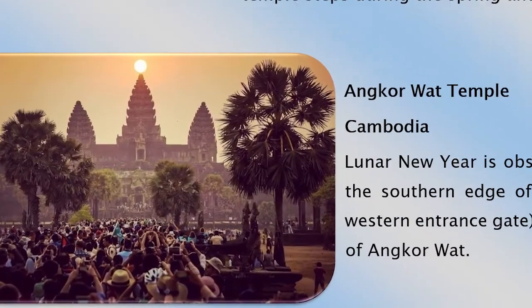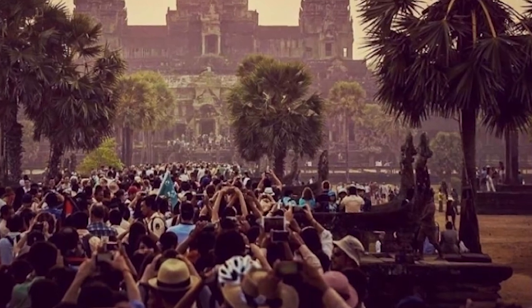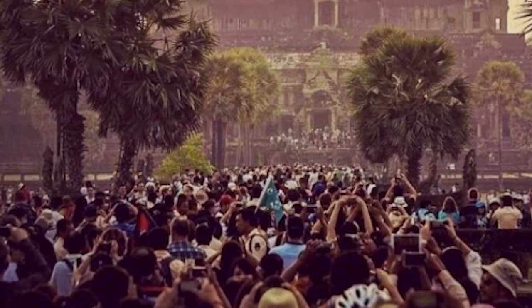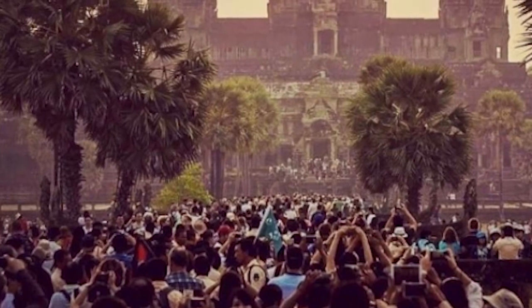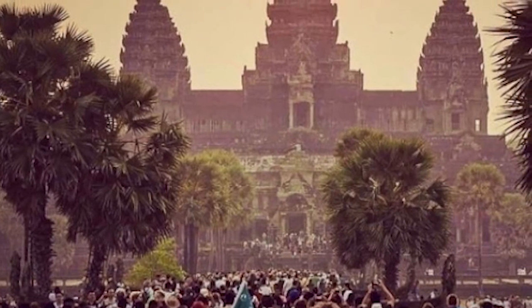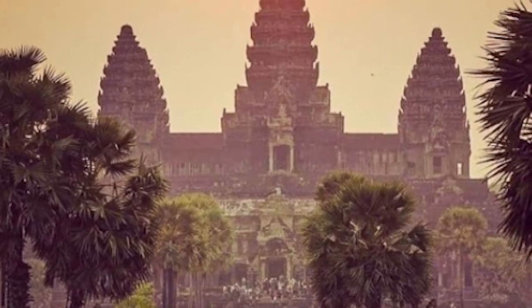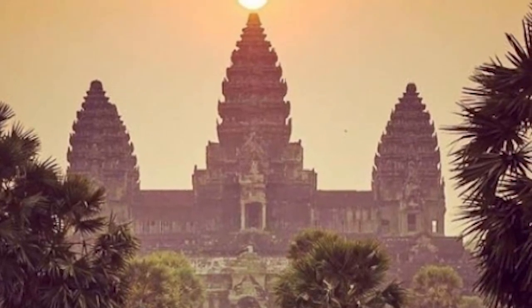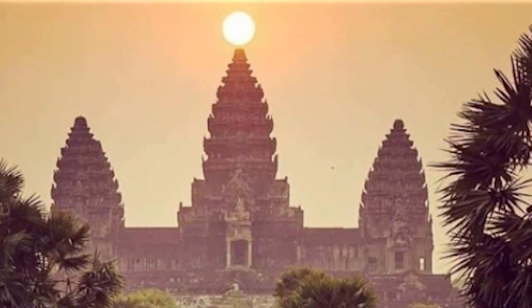The next structure is Angkor Wat Temple in Cambodia. During the spring equinox, an observer standing at the southern edge of the first projection on the causeway, just in front of the western entrance gate, can see the sun rise directly over the top of the central tower of Angkor Wat. This is another structure — not in the Americas but in Asia — that aligned their temple to the sun.